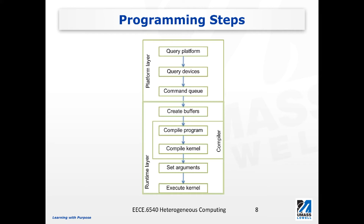The next step is to compile the program — here we are really referring to the kernel program. We can have a kernel function stored in a .cl file, and then we need to compile the kernel into a binary that can be executed on the accelerator device, whether FPGA or GPU. The compilation is really device specific. If we are running the OpenCL kernel on a GPU, then the compilation will be performed by the GPU compiler. If we are running on an FPGA device, then the kernel will be compiled by the FPGA's OpenCL development kit, so there are often some differences in kernel compilation at this step.